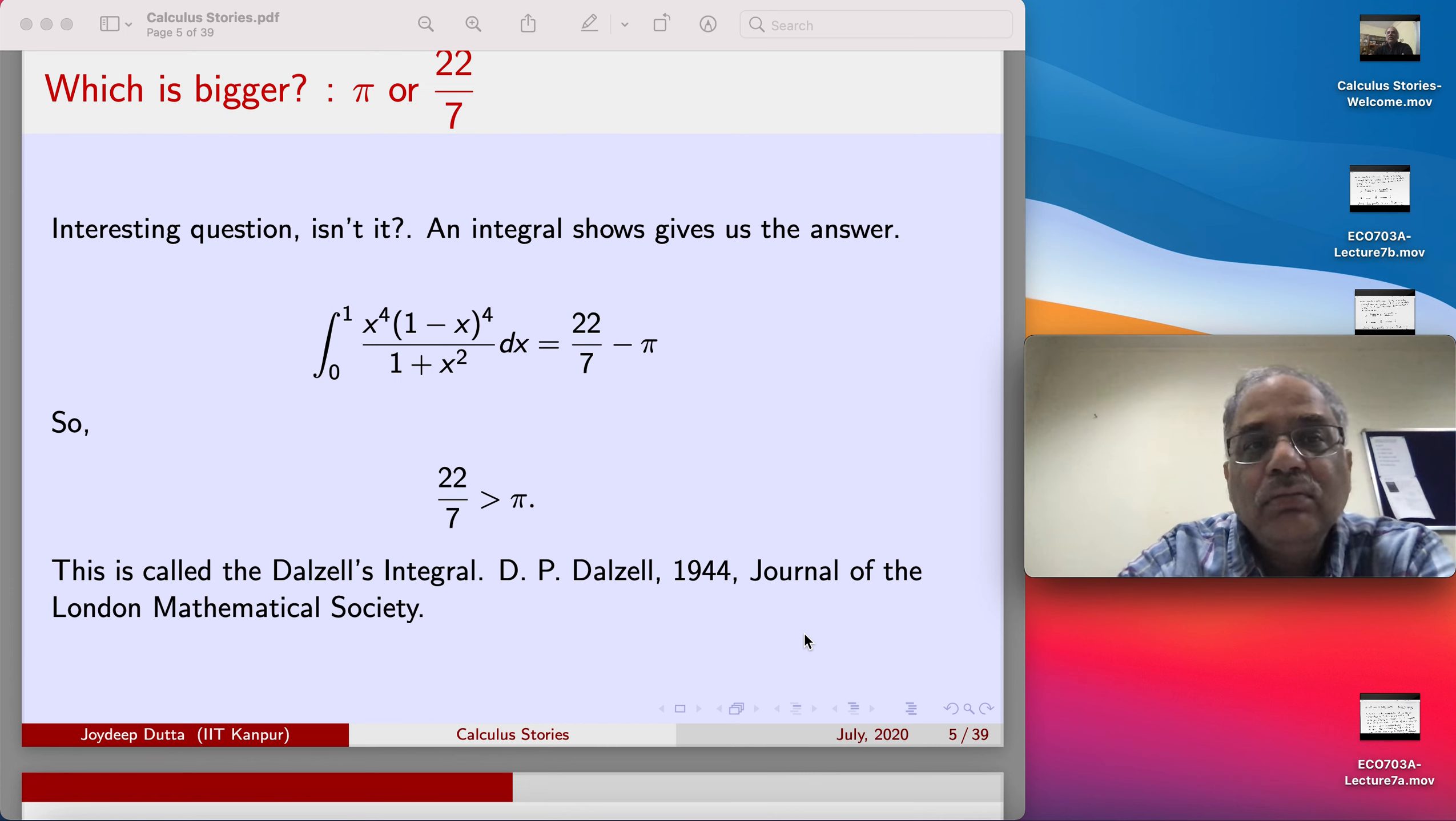The integral shows us the path. Look at the integral: 0 to 1 of x^4(1-x)^4 divided by 1+x^2 dx. When x equals 1 or x equals 0, the integrand is 0, or else it is positive, so the area under the curve is positive. It can be figured out and shown that this integral has a beautiful answer: 22/7 minus pi. Because I know the integral is positive, you can immediately conclude that 22/7 is strictly bigger than pi.